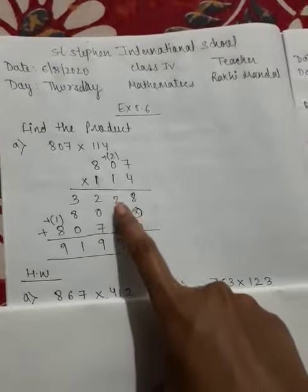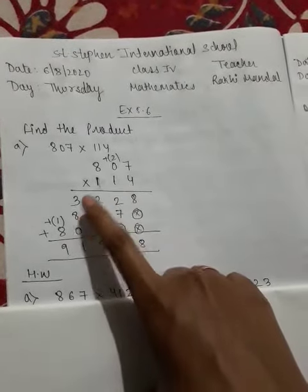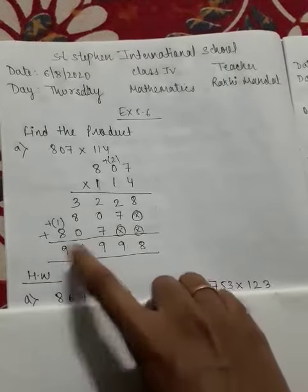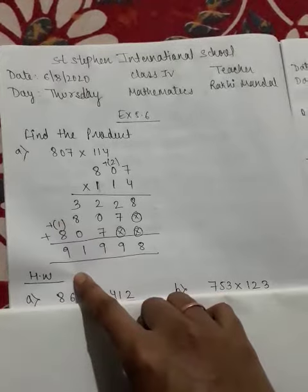This number, 8. 7 plus 2 is 9, 7 plus 2 is 9, 8 plus 3 is 11. 1, 1 is carry, so 8 plus 9 is 9.